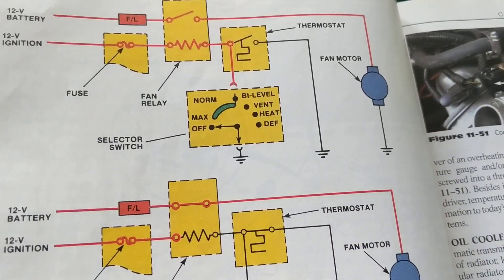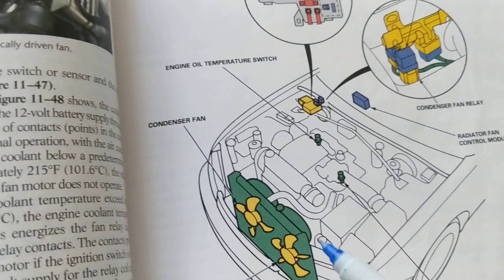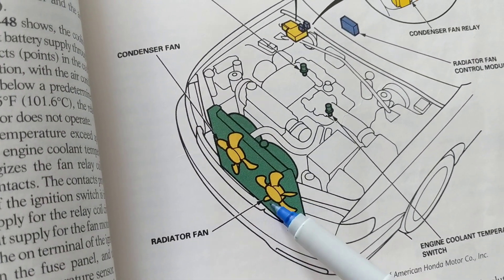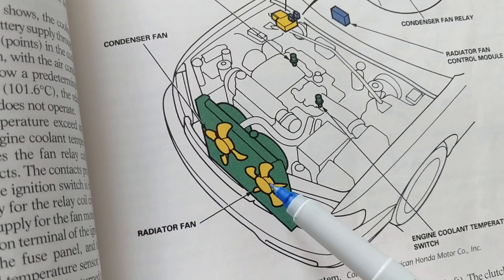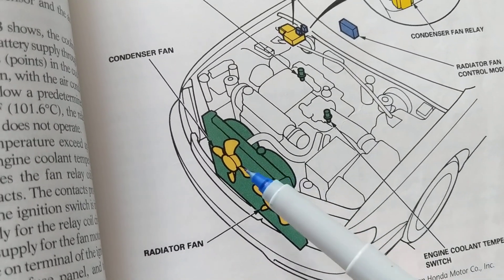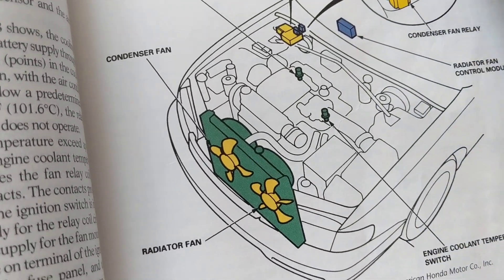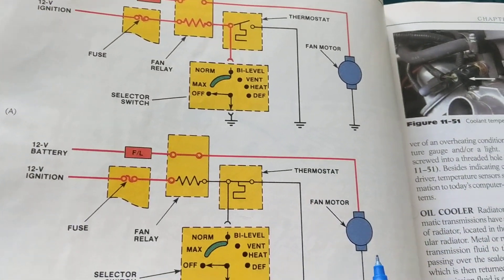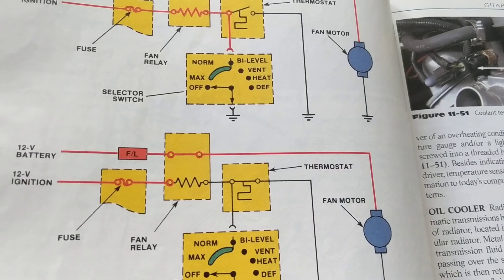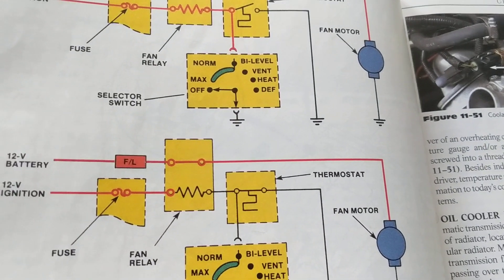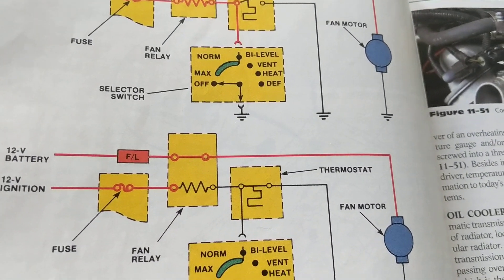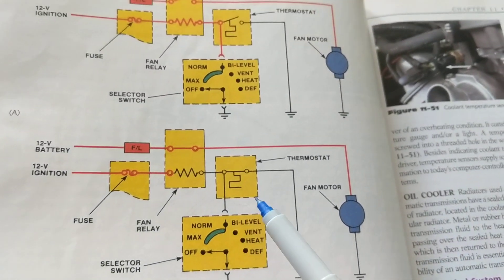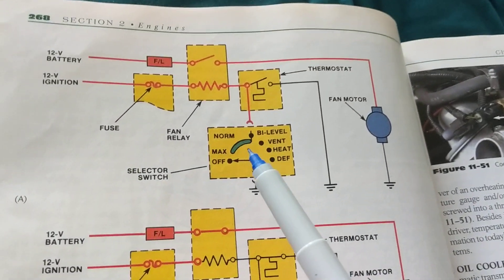We have two fans. One is the radiator fan, which comes on when the coolant temperature is above a certain temperature. The other is the condenser fan, which activates when you turn on the air conditioner. So let's look at the electrical side — if we don't see the fan coming on, we're obviously going to overheat, especially at idle.